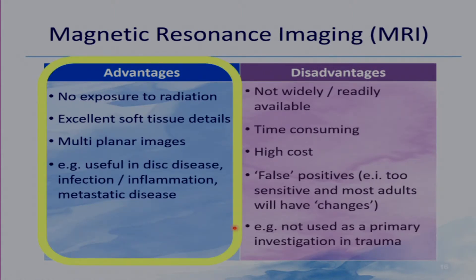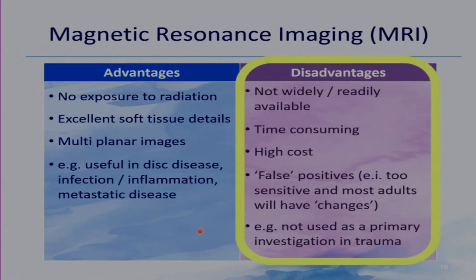The advantages of MRI are there is no exposure to radiation, it gives excellent soft tissue details, and multi-planar images can be acquired. Therefore, it is very useful in disc disease, infection, inflammation, and metastatic disease. The disadvantages are that it is not widely or readily available, it is time-consuming, high cost, and has false positives — that is, it's too sensitive. As mentioned earlier, most adults will have some changes.